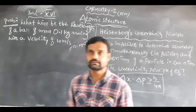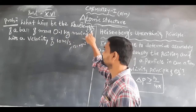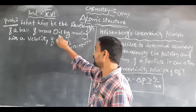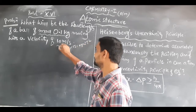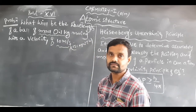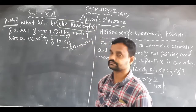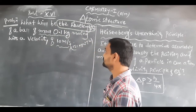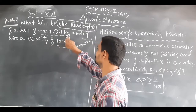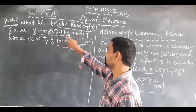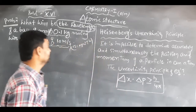Here we observe one model problem: what will be the wavelength of a ball of mass 0.1 kg moving with a velocity of 10 meters per second? We need to find out the wavelength.